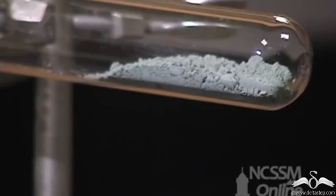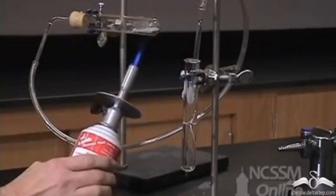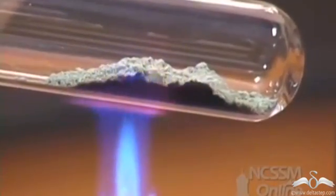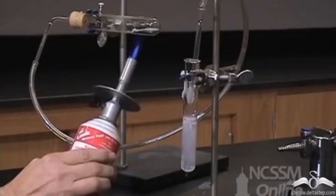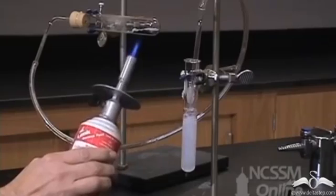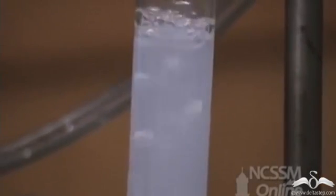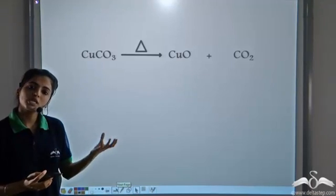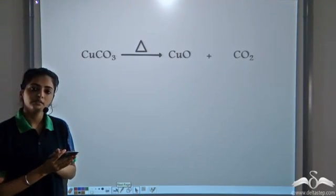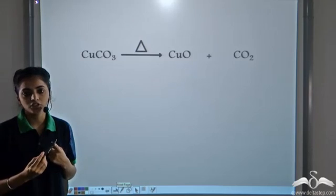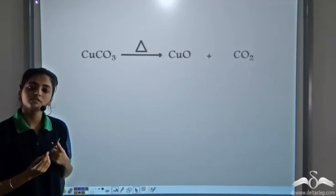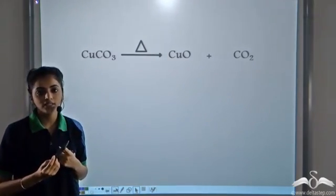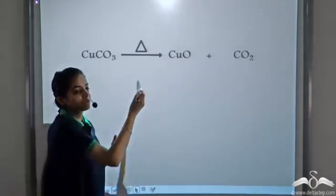As we heat this copper carbonate, which is in the solid form, on heating it changes into a black compound — that is, copper oxide — and a gas is released, which can be seen through the bubbles rising. This contains lime water. The gas turns lime water milky, meaning the gas evolved is carbon dioxide. So if we just keep copper carbonate without heating it, no chemical reaction will take place. But when we heat it, it forms a black residue — copper oxide — and releases carbon dioxide.